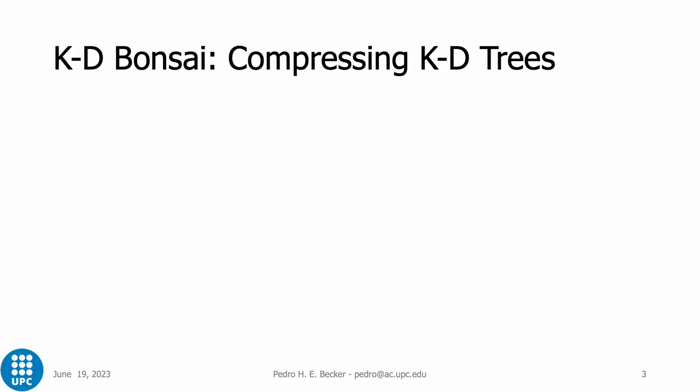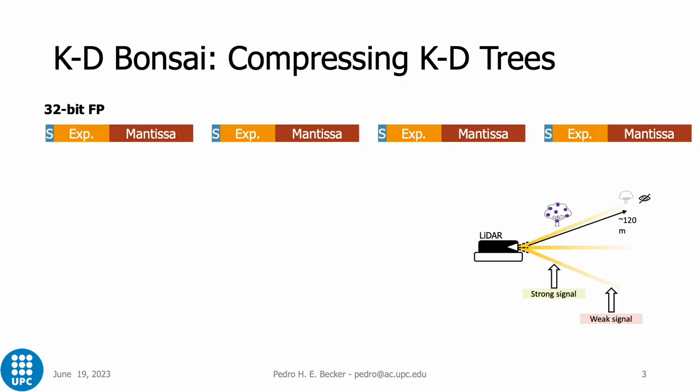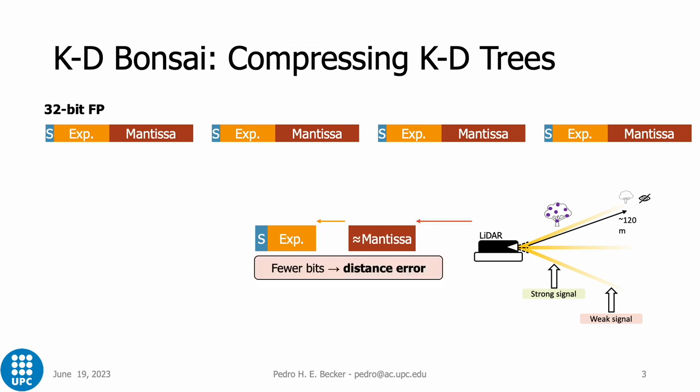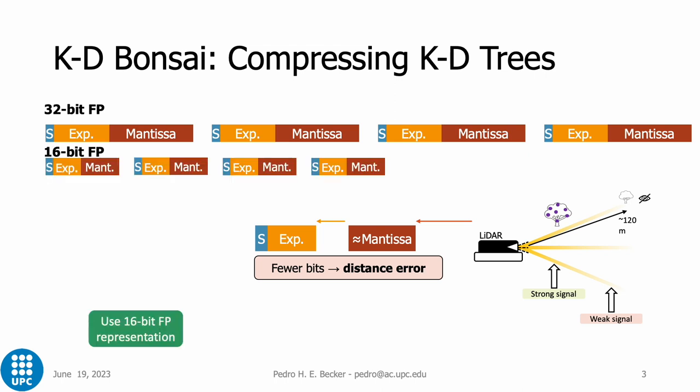Our idea, KD Bonsai, exploits a set of observations to reduce the data movement when performing radius search on KD trees. First, we observe that LiDAR sensors have a limitation in the range of operation, which allows cutting off exponent bits in the floating-point representation of the points without affecting the values obtained by LiDAR. Further, we can also reduce the representation of the mantissa at the cost of some error when calculating the distance, but allowing the data to be stored in the smaller 16-bit floating-point representation.